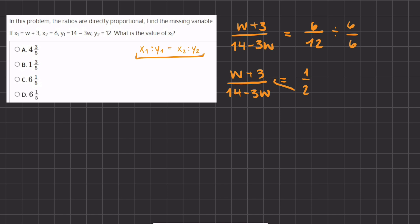Now we can cross-multiply these two denominators and numerators. So we will have 2 times w plus 3, equals 1 times 14 minus 3w. Now let's use the distributive property and distribute this two. We have 2w plus 6, equals 14 minus 3w.